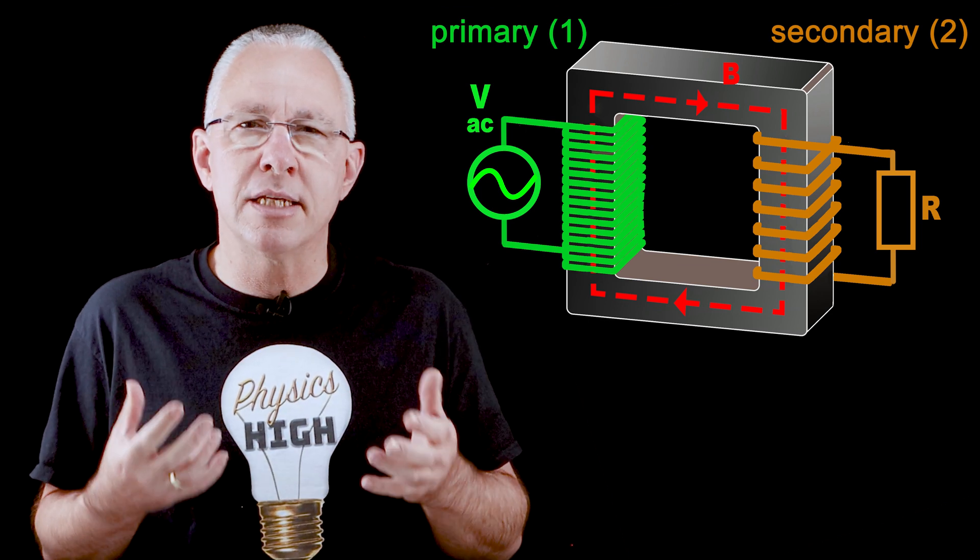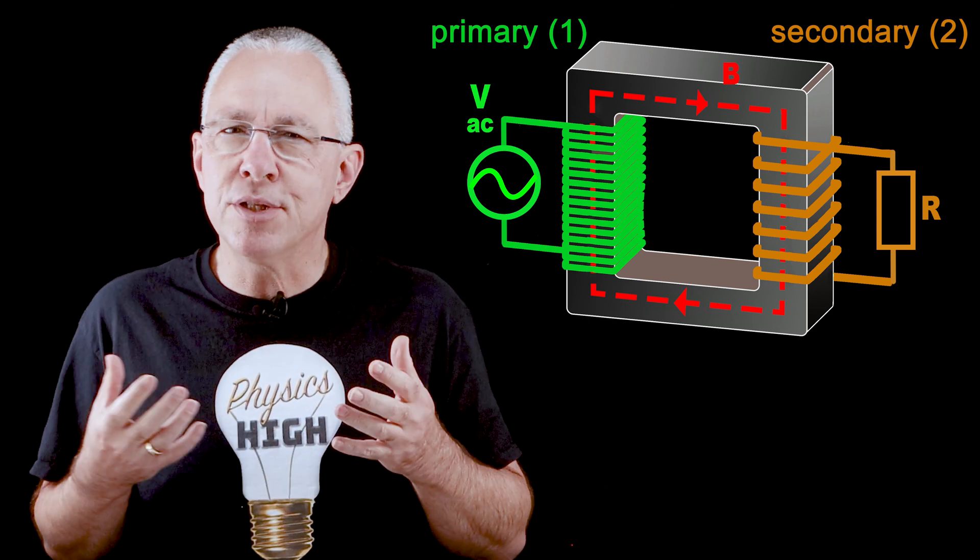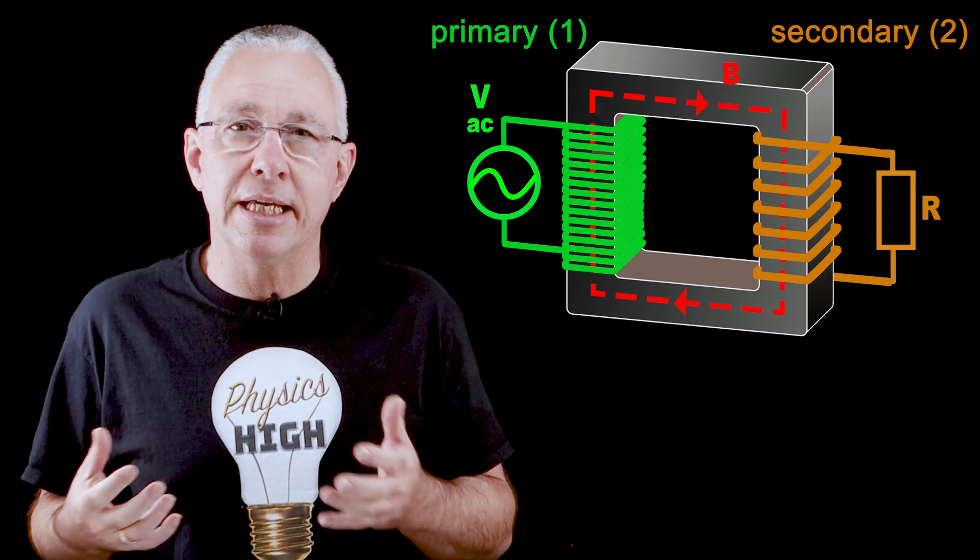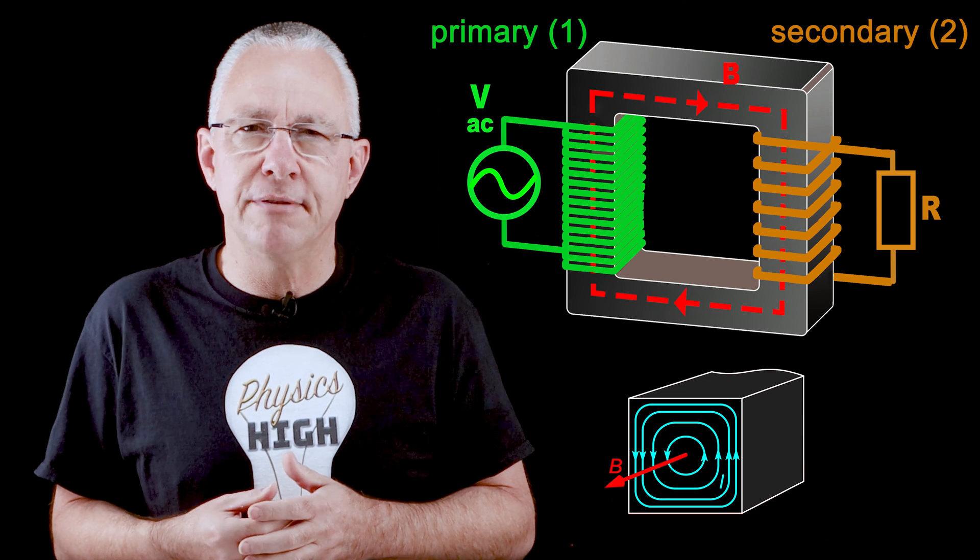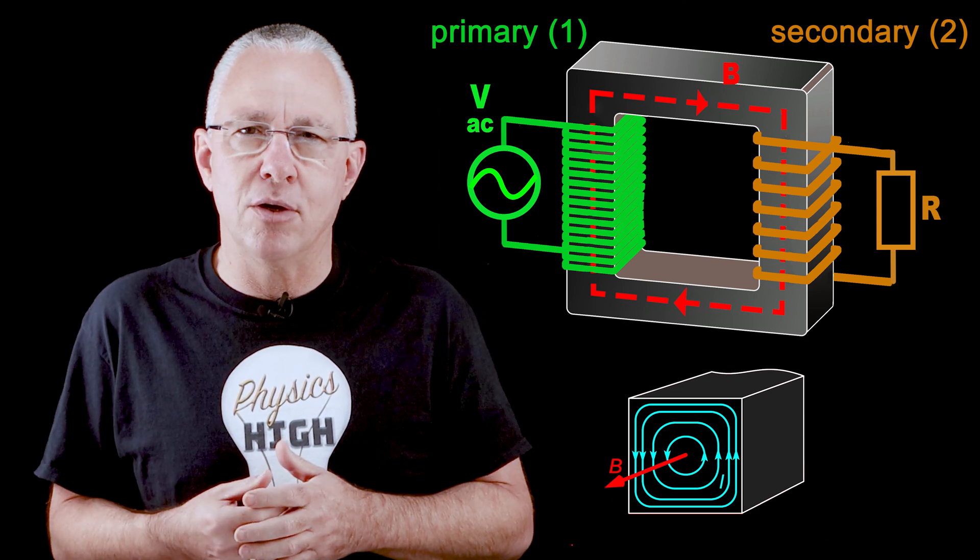But this introduces another source of power loss. Because the iron core is also experiencing a rate of change of flux, eddy currents are formed in the iron core. This causes resistive heating and is a source of power loss.